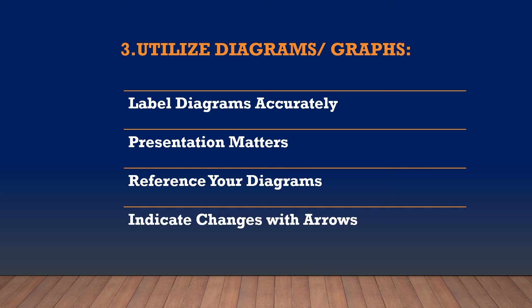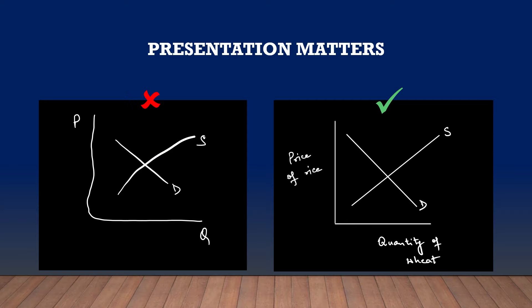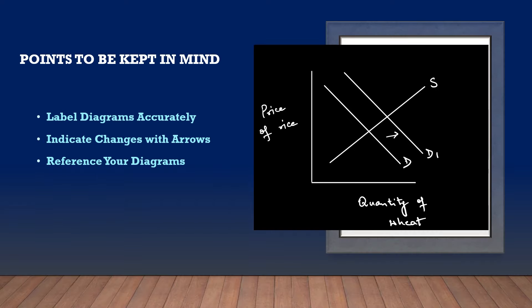Another powerful tool at your disposal is the use of diagrams and graphs. Diagrams and graphs are not just visual aids — they are crucial for illustrating complex economic relationships. Presentation matters. Use a ruler for straight lines to keep your work neat and professional. Avoid vague references like 'in the left figure'. Be specific in your illustrations. Don't just draw diagrams half-heartedly; explain what they illustrate. Accuracy is key. If you are discussing demand or supply, mention what is being supplied — be it wheat, water, or any other commodity. And always label your axes clearly.